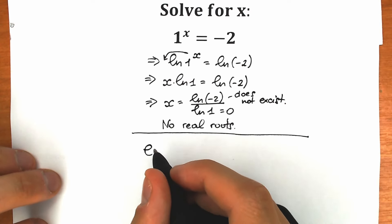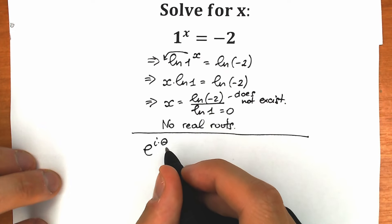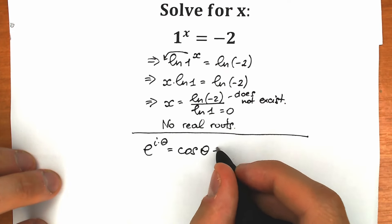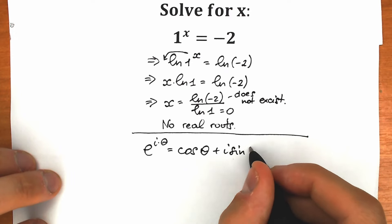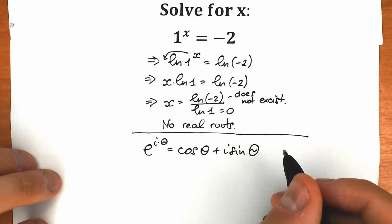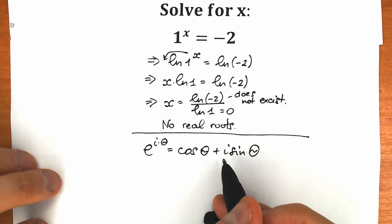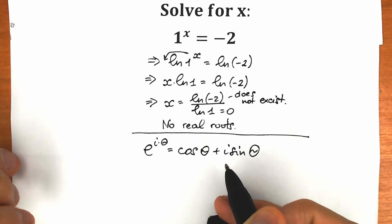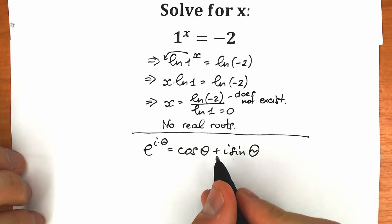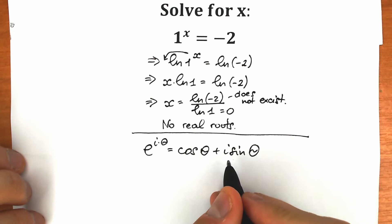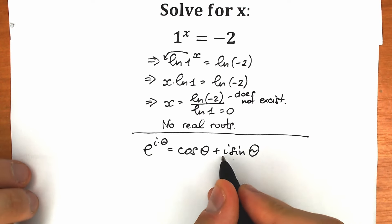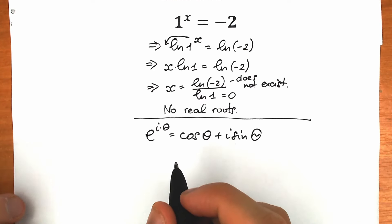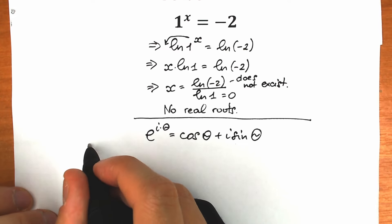Euler's identity looks like: e to the power i times theta equals cosine theta plus i times sine theta. This identity is great for us because we have the complex unit i, and we know there are no real roots here, so this identity will help us a lot.